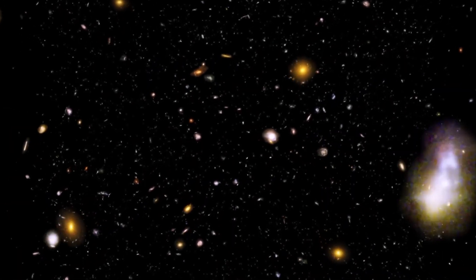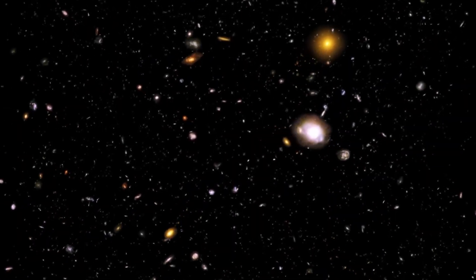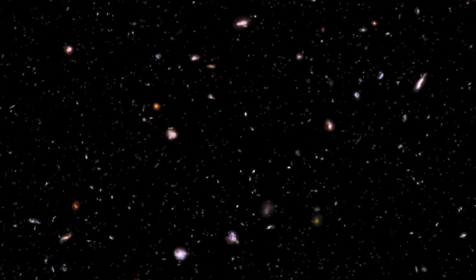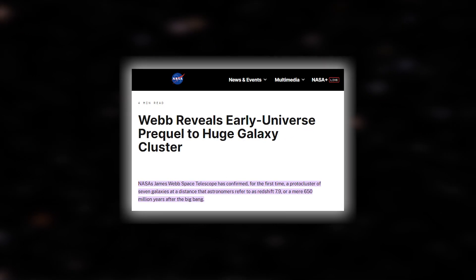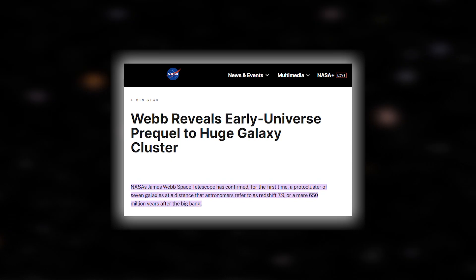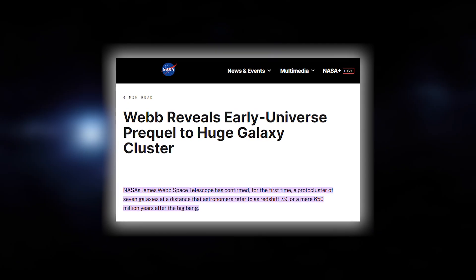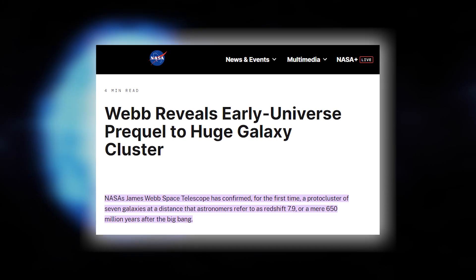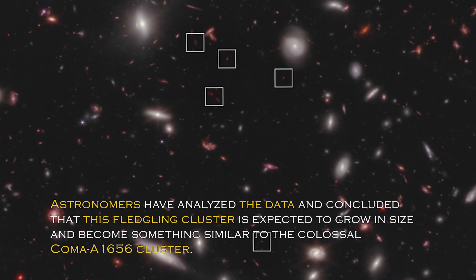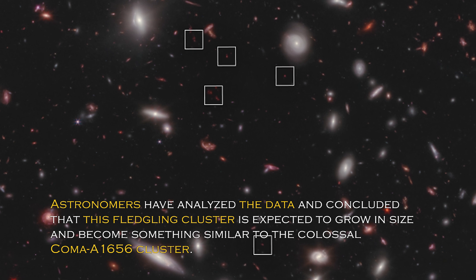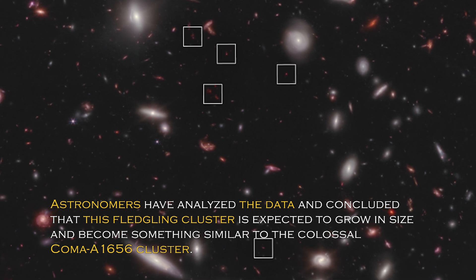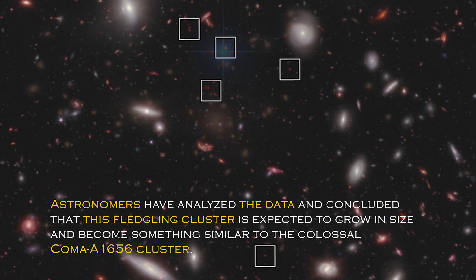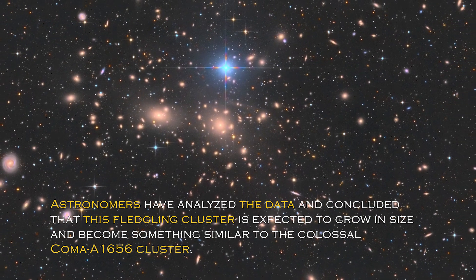Findings from the James Webb Space Telescope challenge what we thought we knew about the Big Bang, leaving scientists at a crossroads. Despite this, NASA recently tweeted about a galaxy cluster that lies just 650 million years after the Big Bang, adding another intriguing piece to the puzzle. Astronomers have analyzed the data and concluded that this fledgling cluster is expected to grow in size and become something similar to the colossal coma A1656 cluster.